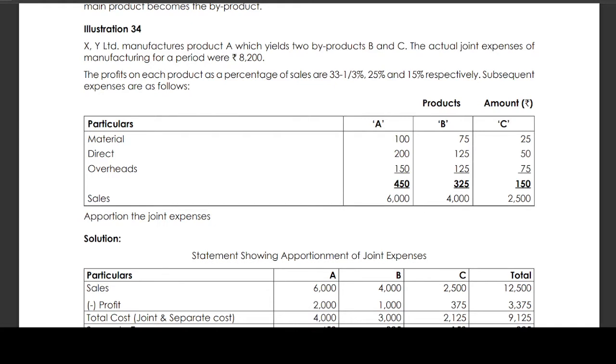Subsequent expenses are as follows: For product A, B, and C - direct labor is 200, 125, and 50; overheads are 150, 125, and 75. So total expenses for main product A is 450, for B is 325, for C is 150. Sales are 6000 for A, 4000 for B, and 2500 for C.